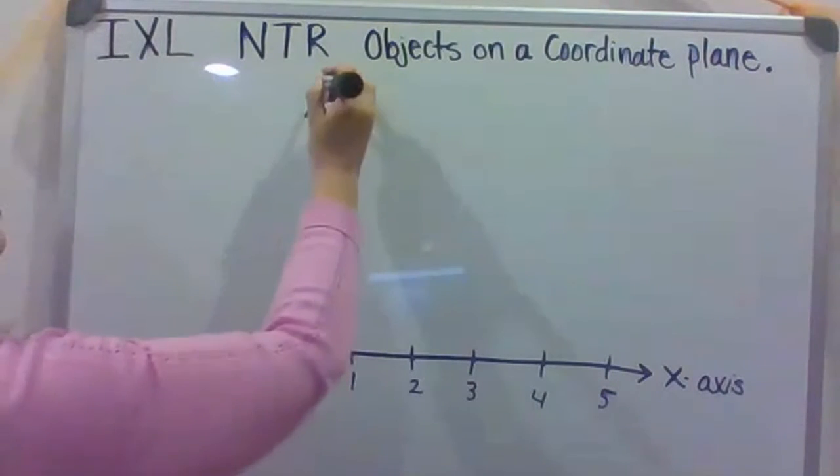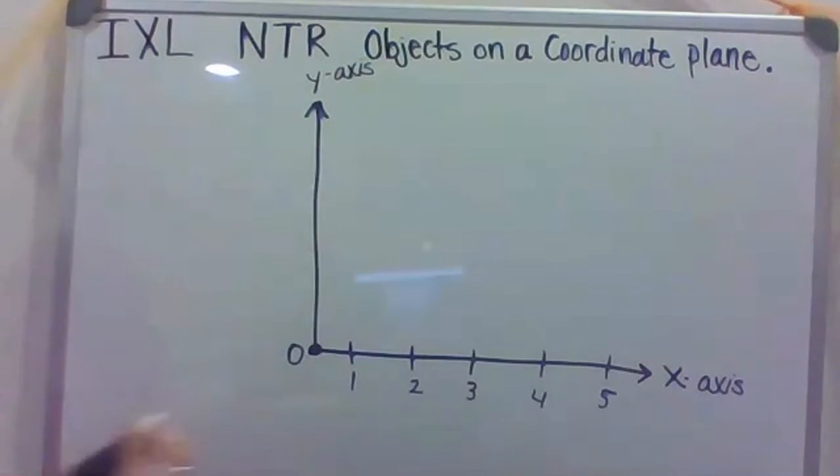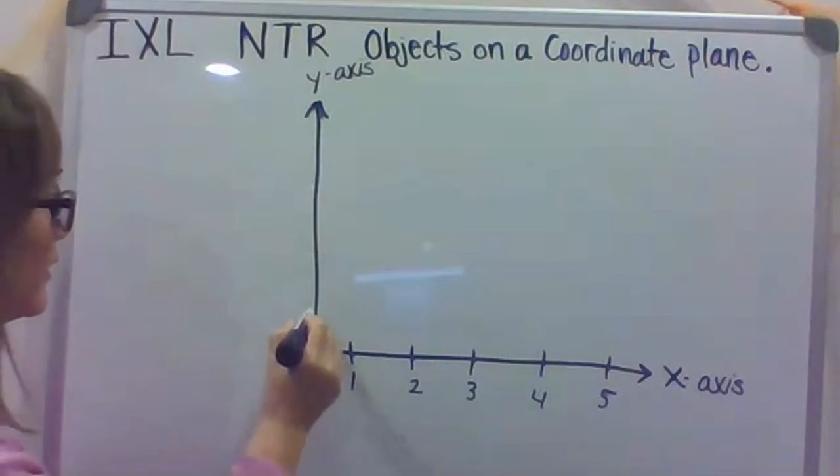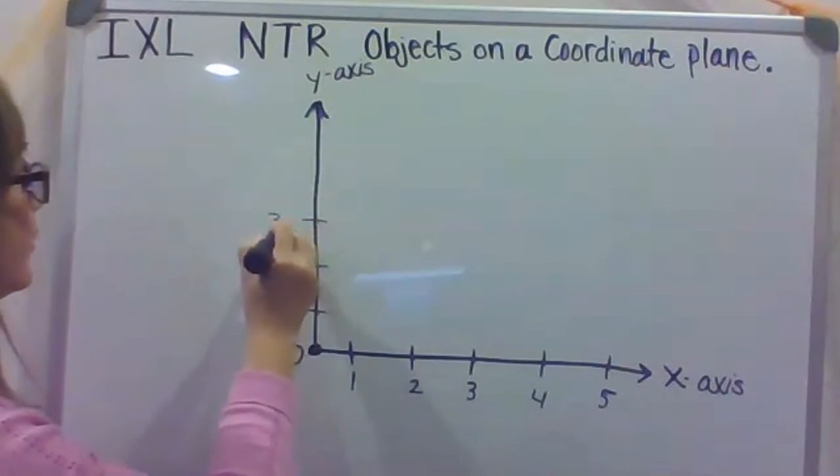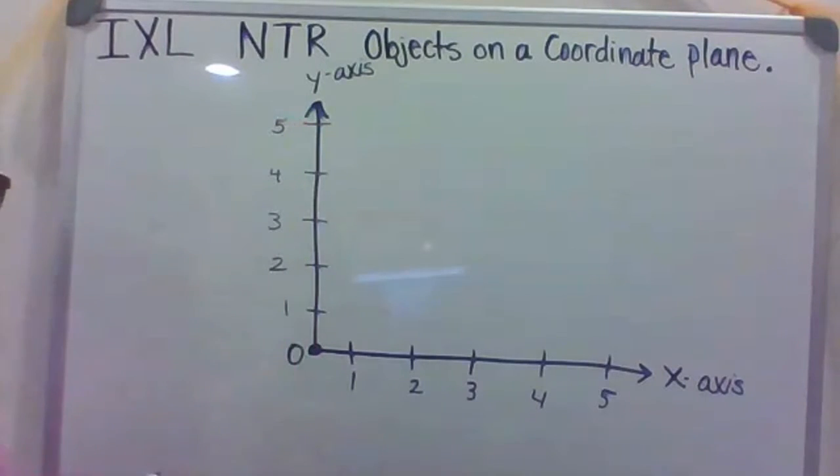And going this direction would be our Y-axis. So I'll do the same thing. If this is 0, then this would be 1, 2, 3, 4, 5.